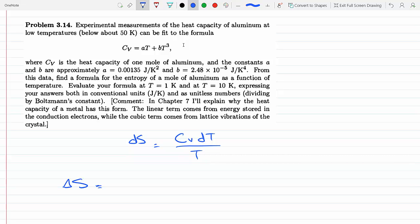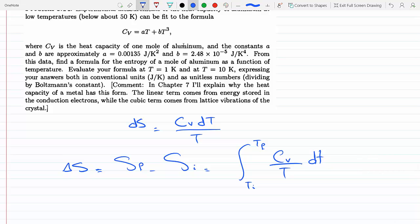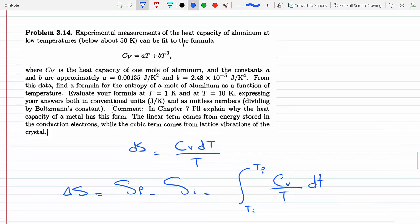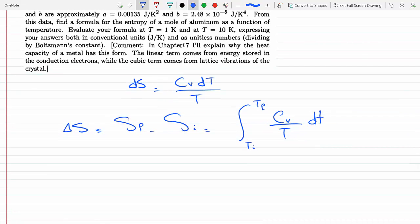We know that Delta S turns into an integral. S final minus S initial equals the integral from T initial to T final of CV over T dT. If I plug the expression for the CV heat capacity at low temperature at constant volume,